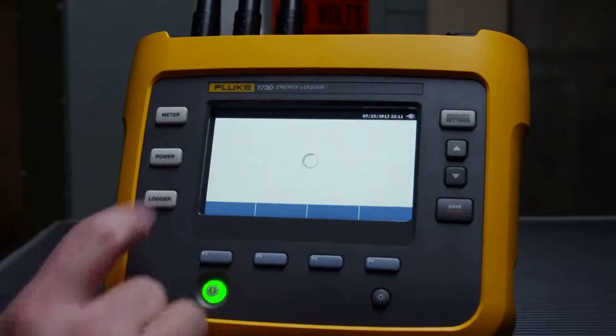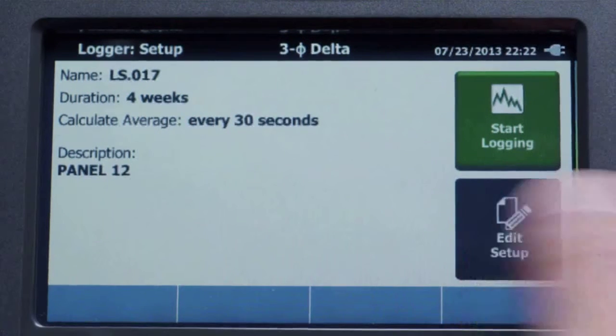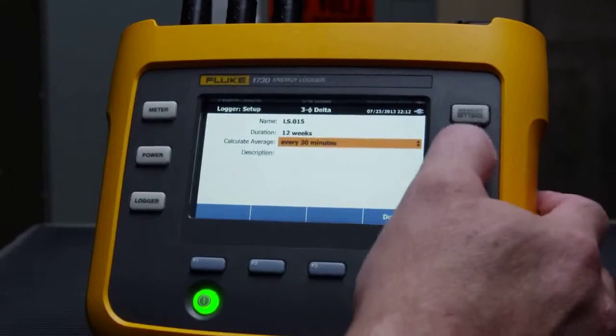When you press the Logger button, the last used or default settings are displayed. If you need to change these, select Edit Setup, then scroll through the menu to make the changes you need.